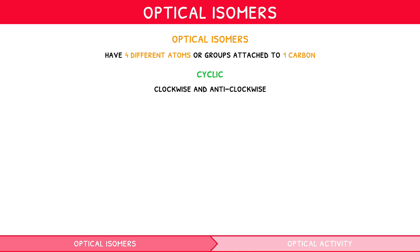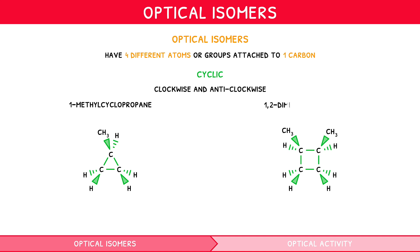Let's talk through two examples: 1-methylcyclopropane and 1,2-dimethylcyclobutane, represented by the following displayed formula. Starting with 1-methylcyclopropane, we can ignore the two carbons with two hydrogens attached, as they cannot have four different groups. Working clockwise from the remaining carbon, we create a theoretical group of CH2CH2, and anticlockwise CH2CH2. Since these two groups are identical, this carbon would not be chiral, despite the two different groups it has bound.